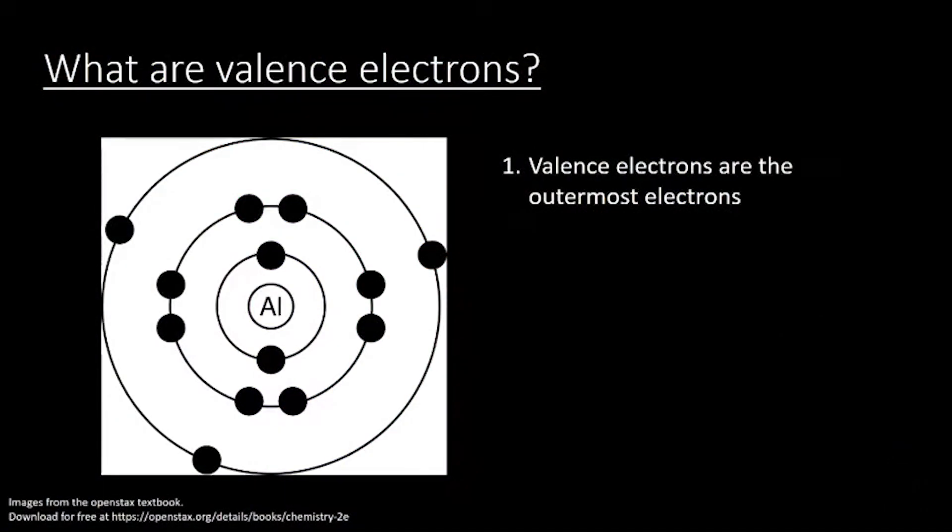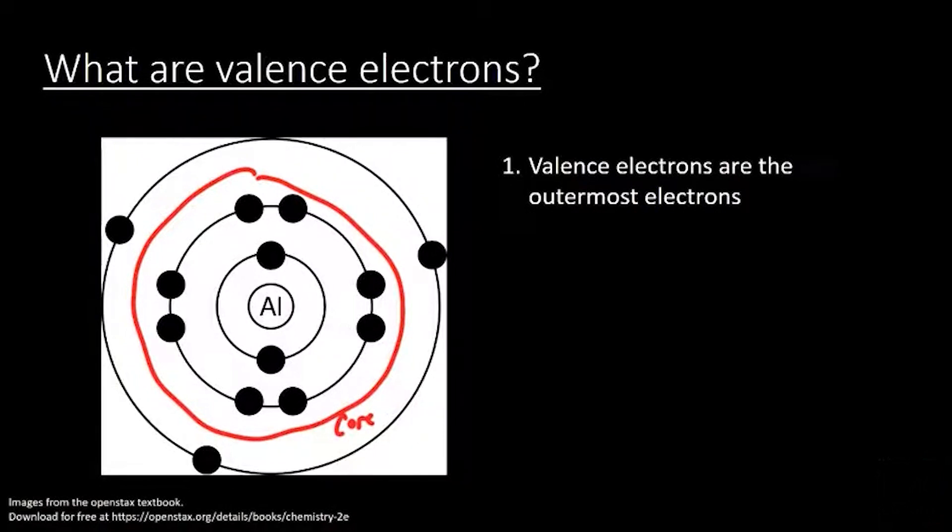Valence electrons are just the outermost electrons. So here I have a representation of aluminum. And aluminum has all these electrons around it, which are shown as those black circles. All of these electrons are what we call core electrons. Meanwhile, those outermost electrons, this one, this one, and this one, are all called valence electrons. So it just means on the outside, and those are really important.